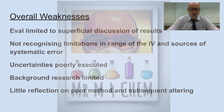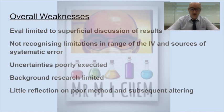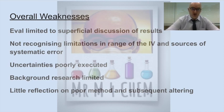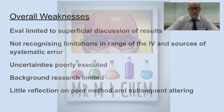Weaknesses: a superficial discussion of results — things like 'it went well' or 'I enjoyed this practical.' Nobody cares. What we do care about is that the chemistry was good, well researched, correct, wide ranging, well referenced. Not recognizing limitations in the range of the independent variable and the sources of systematic error. Evaluation is the most difficult part of the IA to score well on because it requires higher order thinking skills about reflection, about looking at the systematic and random errors.